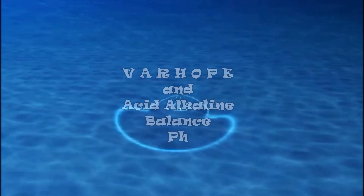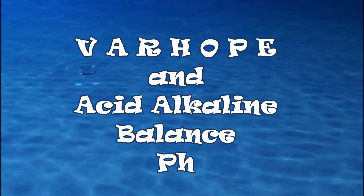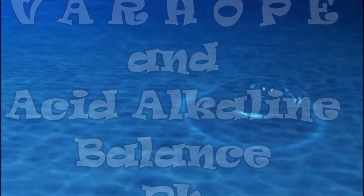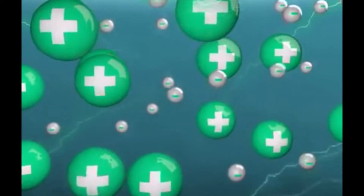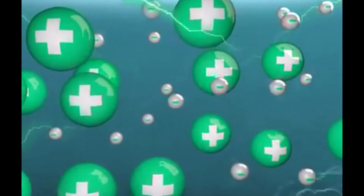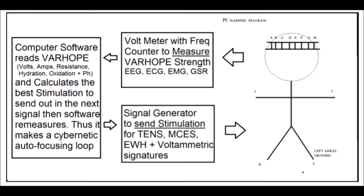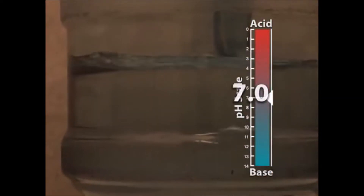Today we're going to be talking about the acid-alkaline balance known as the pH. It's very important that we understand that in the body there are different charged particles, different ions, negative and positive. The amount of these determines our pH. Since we have an electrical measure with carbon electrodes, we can run electricity in different ways, finding out the balance of positive and negative charges, giving us an indication of the proton and electron pressure and the pH.